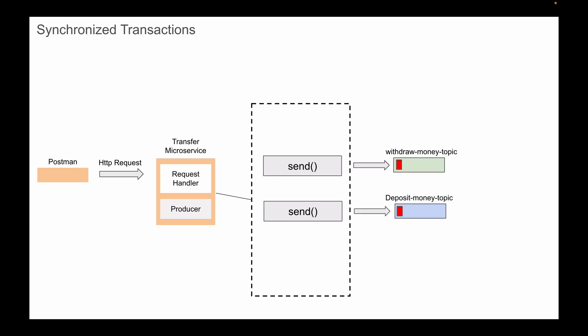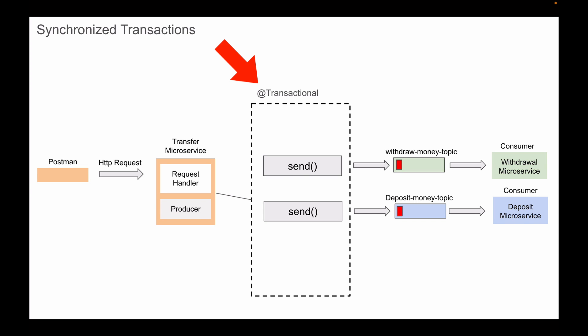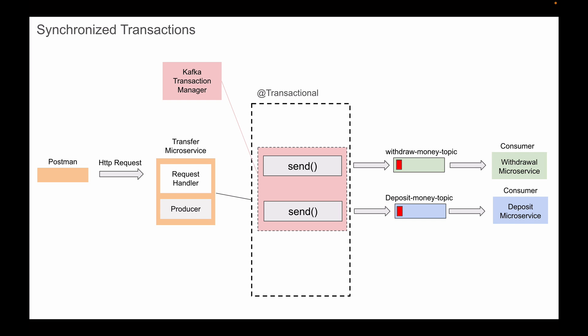Another message it will send to a Kafka topic called the DepositMoney topic. To read messages from these topics, we will have two consumer microservices. In the transfer microservice, we will have Kafka transactions enabled, which means we will annotate the method that sends Kafka messages with the transactional annotation. This will make both of our send methods execute within a single Kafka transaction, managed by the Kafka transactional manager.